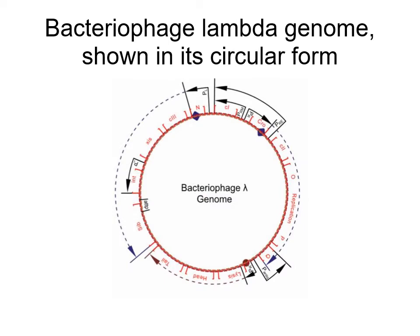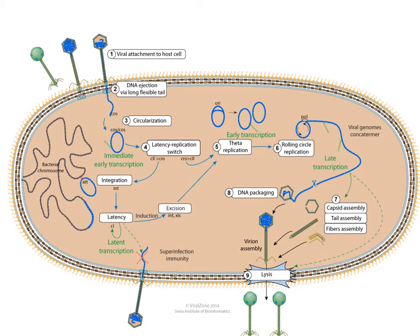The circular form can then undergo replication or integrate into the chromosome of the cell. The virus attaches to the host cell, DNA is injected, the cos sites form a circle and are ligated by the host cell ligase. At that point, lambda has the option of either going through lytic growth to produce more phage, or integrating itself into the chromosome to become a lysogen. We'll talk about the lytic part of the life cycle first and then come back to the lysogenic form, which can lead to transduction.